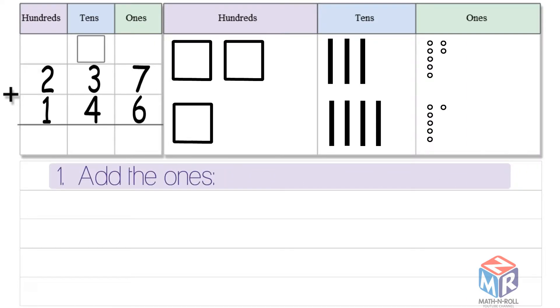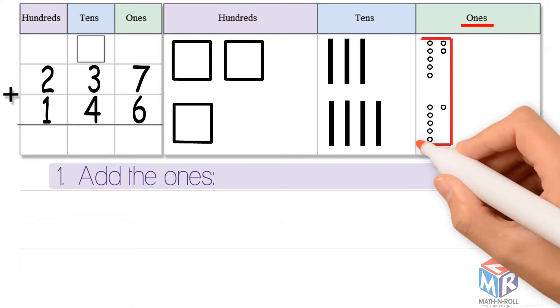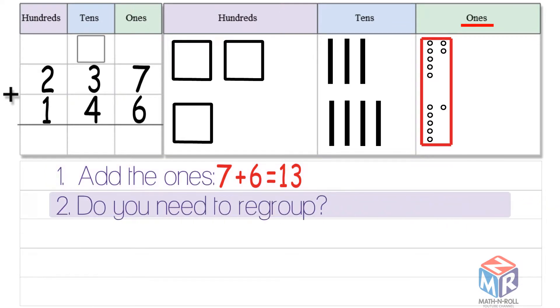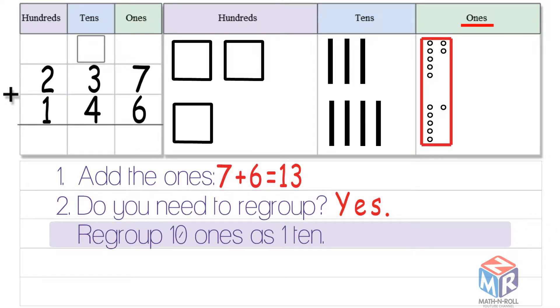First, we add the ones, 7 plus 6 is equal to 13. Do you need to regroup? Yes, because the ones place only fits numbers from 0 to 9, so we regroup 10 ones as one ten. As you can see, 10 ones transfers to the tens column.